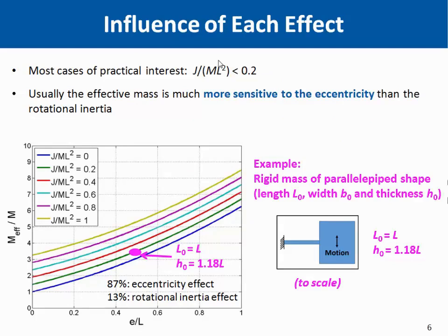Looking at the influence of each effect: in most practical cases, the ratio J over ML² will not exceed 0.2, so we will rarely be above this green line. Therefore the end mass will be much more sensitive to the eccentricity effect rather than rotational inertia, unless the mass is concentric with the beam tip. For example, for a T-shaped device geometry shown on the right-hand side, with a J over ML² ratio of 0.2 and an E over L ratio of 0.5, the end mass is actually 3.5 times the actual mass, and 87% of this factor is due to eccentricity, while only 13% is due to rotational inertia.